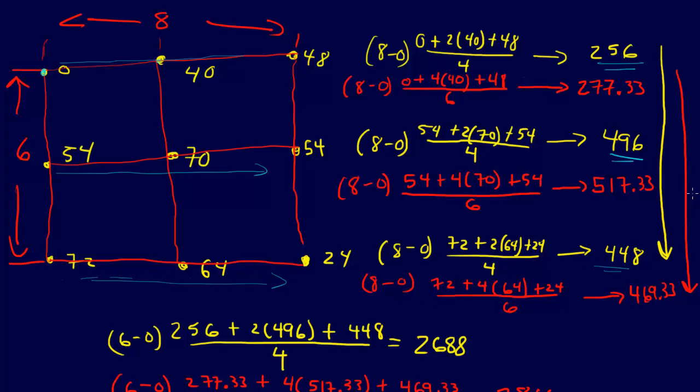Then we can come in this other direction and do the trapezoid rule with those, so we do 256 to 496, 496 to 448, and combine those. Then we get 6 minus 0 times 256 plus 2 times 496 plus 448 divided by 4, and so we get this estimate of 2688. That's doing multiple applications of the trapezoid rule, the composite trapezoid rule.